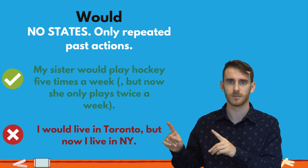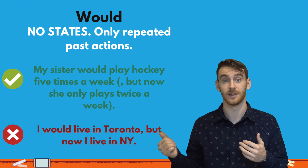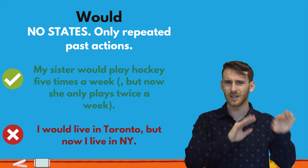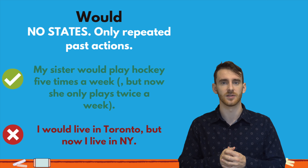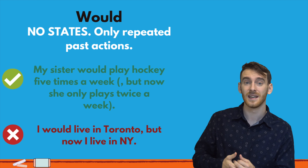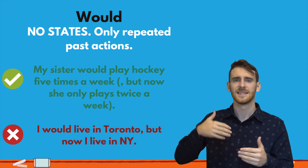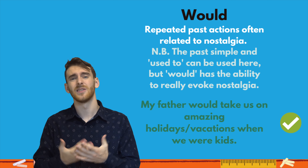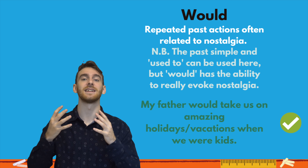Moving on now to 'would.' We don't want to use it with states. So you would not say 'I would live in Toronto, but now I live in New York.' You'd say 'I lived in Toronto, but now I live in New York' or 'I used to live in Toronto, but now I live in New York.' For states, we don't want to touch 'would.' But for repeated actions, we can use 'would,' just like we did with 'used to.' So 'She would play hockey five times a week.' 'Would' is really emphasizing that it's a repeated action in the past.